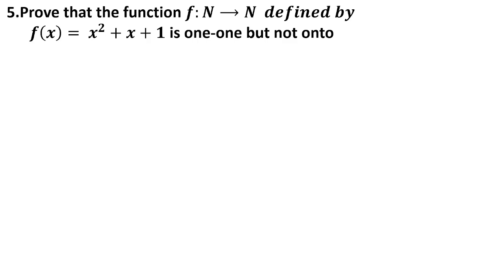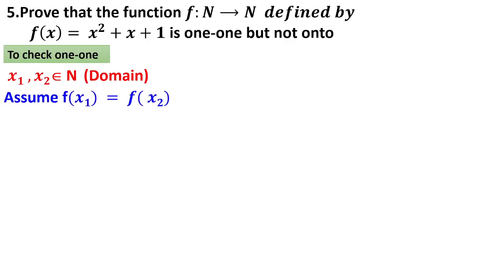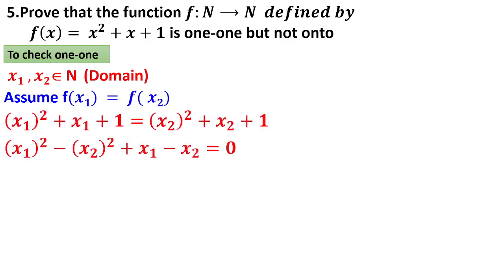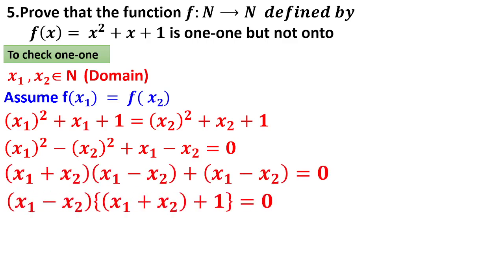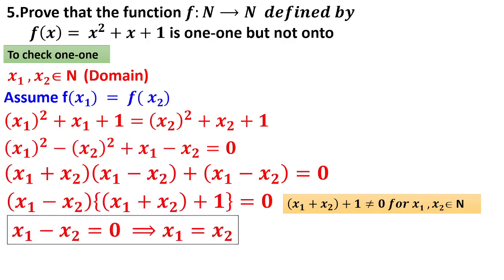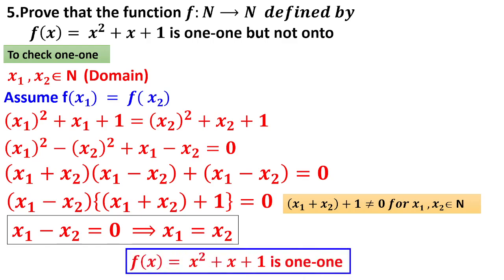Question number 5: Prove that the function f: N → N is one-one but not onto. When proving one-one and onto, pay attention to the given domain and codomain. To check one-one, take two elements x₁ and x₂ in the domain and assume their images are equal. We need to prove the pre-images are equal. Starting from f(x₁) = f(x₂), simplifying using a²-b² formula, and factoring out (x₁-x₂), we find that (x₁+x₂+1) cannot equal zero since all are natural numbers, so x₁ minus x₂ = 0, meaning x₁ = x₂. Therefore it is one-one.